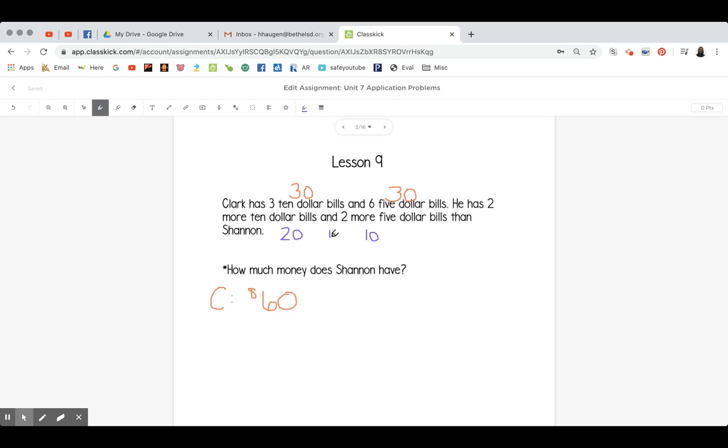Well, how much more money does he have then? $20 plus $10 is $30. So we know he has $30 more than Shannon.